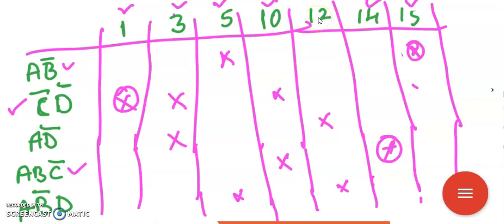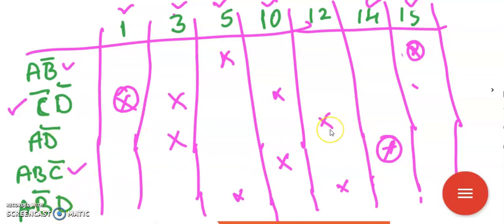Since 12 is not covered, scan its column — there are 2 cross marks. Look at what terms those are: one is AD̄ and the other is AB̄D. Comparing these two, AD̄ is better because it has only 2 variables, whereas AB̄D has 3 variables. So go with AD̄ as the necessary term — not essential, but necessary. Club it along with the essential prime implicants: AB̄ + C̄D̄ + ABC̄ + AD̄. This gives the best solution.